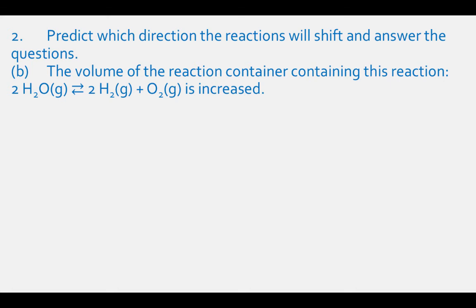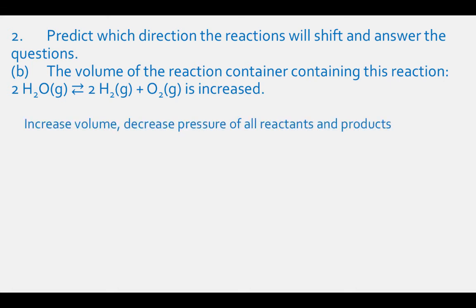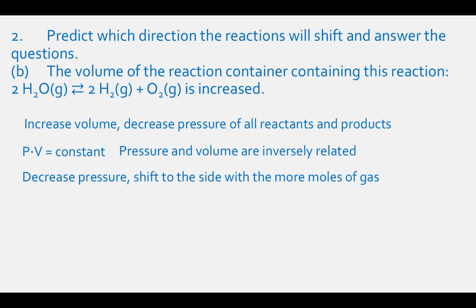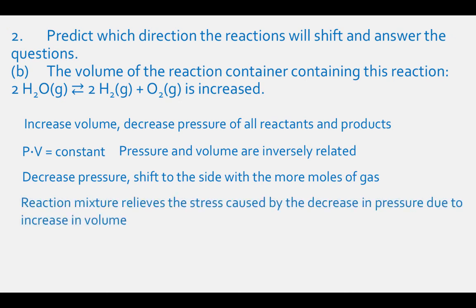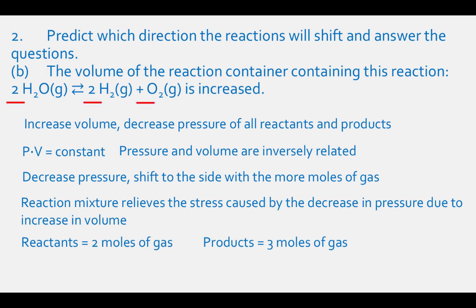For part B, if we increase the volume of this reaction mixture, we will also decrease the pressure of all the reactants and products because pressure times volume equals a constant. If we decrease the pressure, the equilibrium will shift to the side with more moles of gases. The reactants have 2 moles of gas (2 from H2O) and the products have 3 moles of gas (2 from H2 and 1 from O2). The reaction shifts to the right, toward the products.